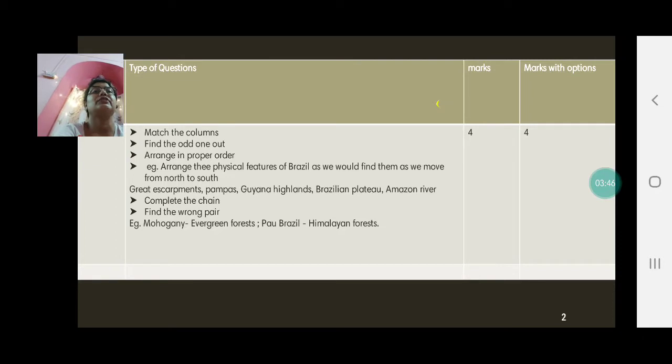For example, arrange the physical features of Brazil as we would find them as we move from north to south. So in the north, of course, we have the Guiana Highlands first, followed by the Amazon River. Then the Brazilian Plateau. Then comes the Great Escapments. And right in the south you have the Pampas, the Grasslands. So here you have to think. Don't just write okay I know. Think and answer well.